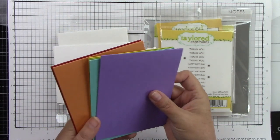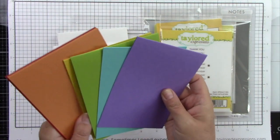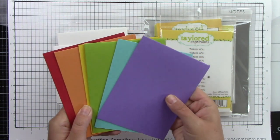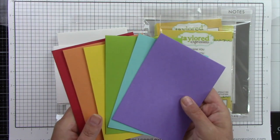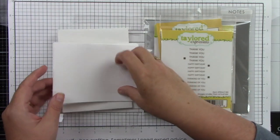Now here are some A2 card bases in different colors. There are six here. I'll be making six cards. So you can use any color of card bases that you like.